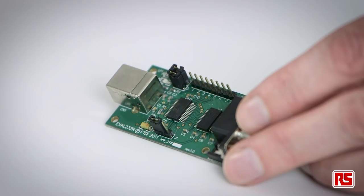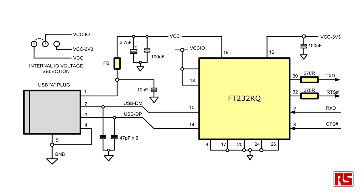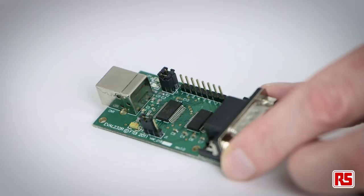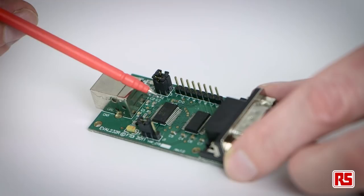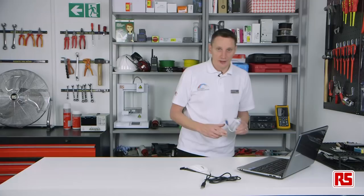With the addition of a level shifter we can upgrade the UART signals to RS422, RS485 and RS232 levels. You can see on this module we have the 232R chip and a level shifter chip giving us the RS232 levels on the DB9 connector.